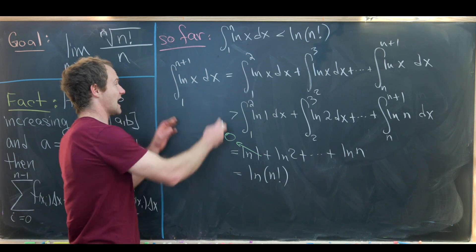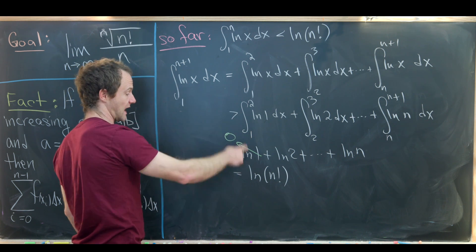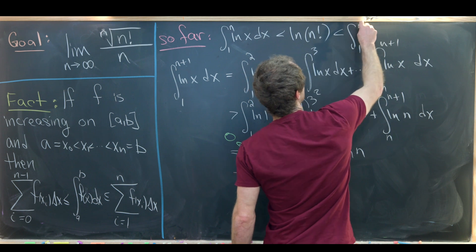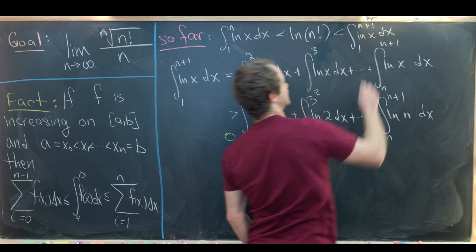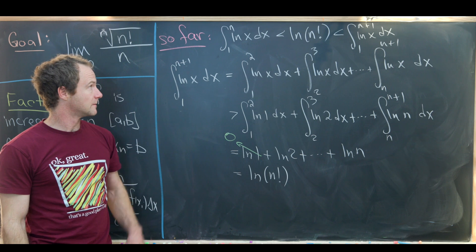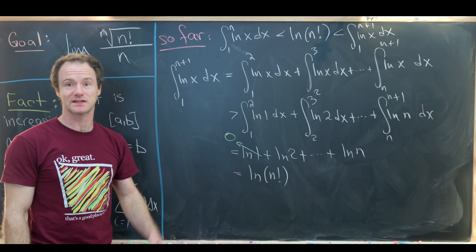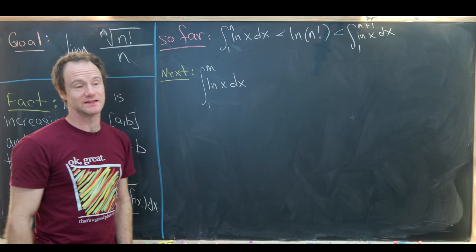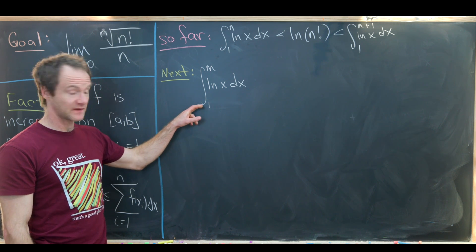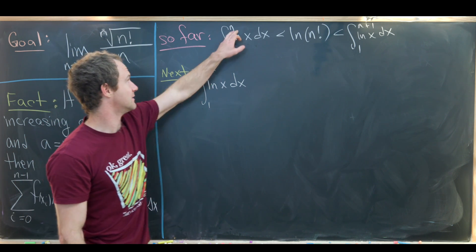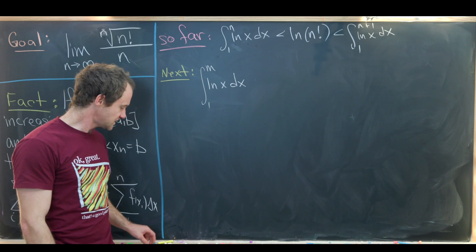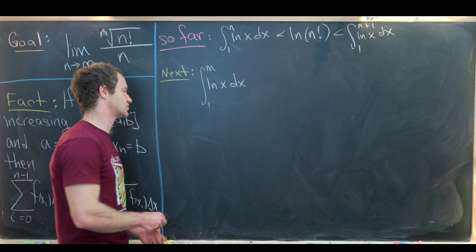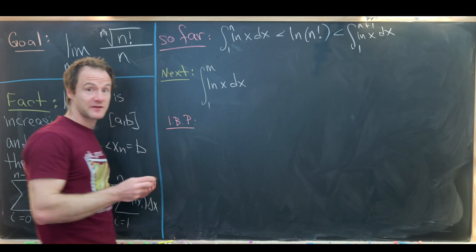So we have the integral from 1 to n+1 of ln(x) dx is bigger than ln(n!). Let's complete our full inequality and then calculate the two ends exactly using integration by parts. We compute the integral from 1 to m of ln(x) dx, where m is n on one side and n+1 on the other. Since we're integrating an inverse function, from Calculus 2 we use integration by parts.